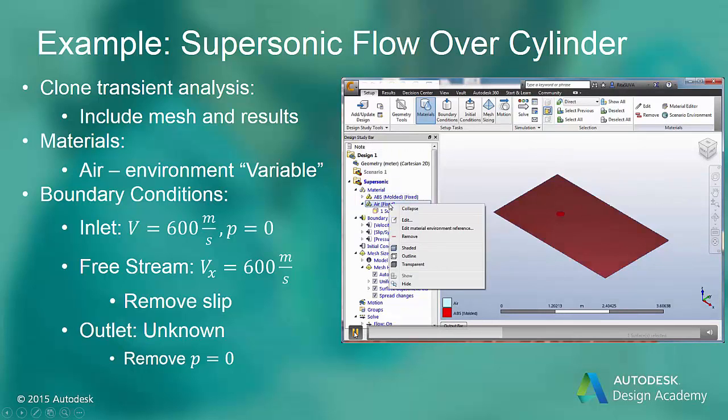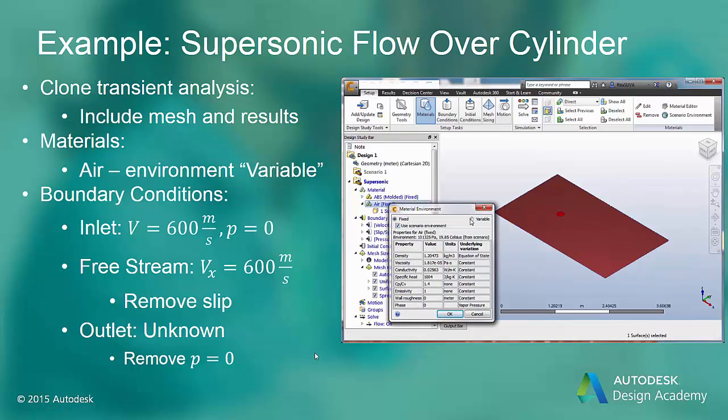On the materials, the only change we need to make is to make the air density variable. And this can be accomplished by editing the environment for that material air and setting the variable button. And this will allow the density to vary by the equation of state.